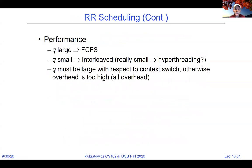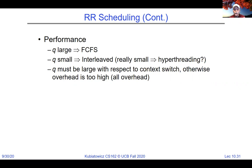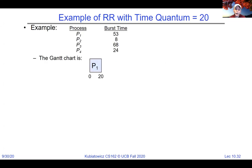Round robin performance: if Q is extremely large, it converges back to FIFO. If Q is really small, we interleave finely — similar conceptually to hardware hyperthreading. Q must be large enough that context switch overhead doesn't dominate, but not so large that responsiveness suffers. Here's an example with time quantum = 20: processes P1 (53), P2 (8), P3 (68), P4 (24). P1 runs for 20, then times out.